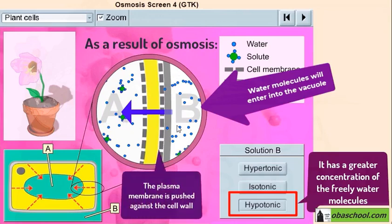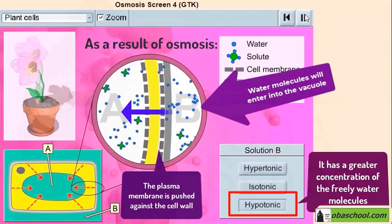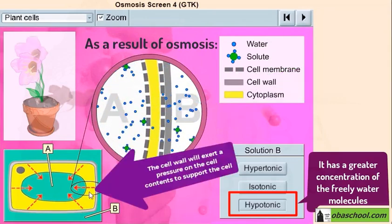The plasma membrane is then pushed against the cell wall, as shown here by the red arrows. So the cell wall will exert the pressure on the cell contents to support the cell, even if the solution is still hypotonic.